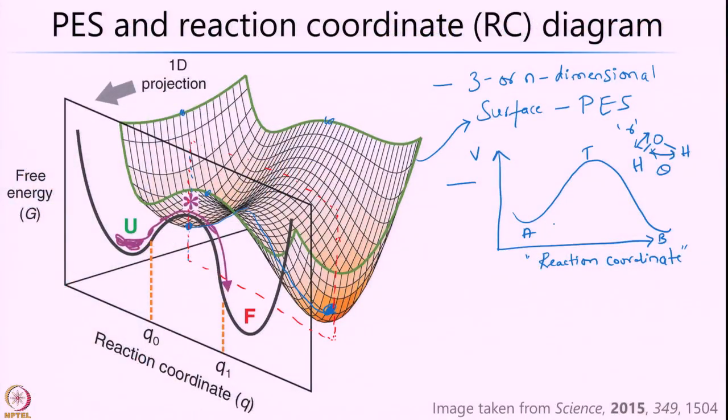That is the distinction between what is called a reaction coordinate diagram and potential energy surfaces. The two-dimensional slice is called an RC diagram. A potential energy surface is a three or n-dimensional hypersurface in which you look at how the energy of the system changes as a function of the different vibrational degrees of freedom — 3n minus 5 or 3n minus 6 depending on the system. A reaction coordinate diagram is a two-dimensional slice of a potential energy surface representing the important steps in the reaction you are interested in.